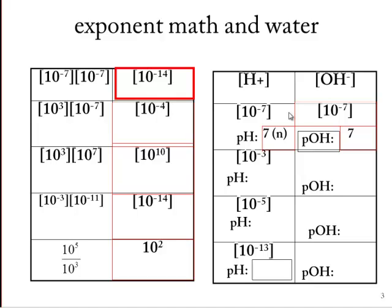10 to the minus 3rd. I think that's a pH of 3. The hydroxide ion concentration must be 10 to the minus 11th. The pH must be 3. And the pOH is 11. They always add up to 14. That's an acid.